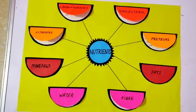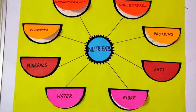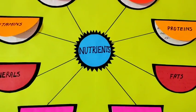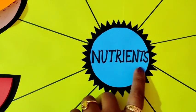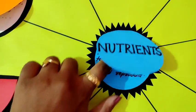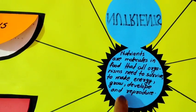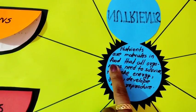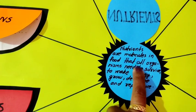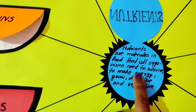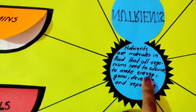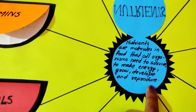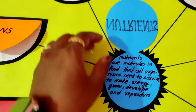This nutrient project is ready to explain now. First, let us understand what are nutrients. Nutrients are molecules in food that all organisms need to survive — to make energy, grow, develop, and reproduce.